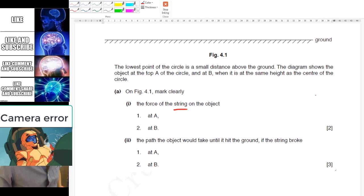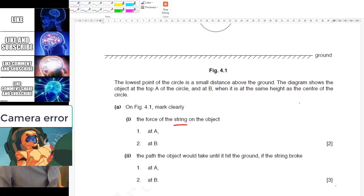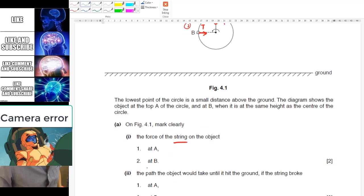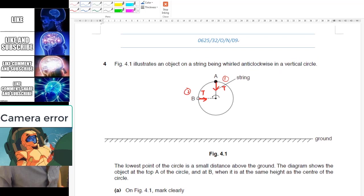On the path of the object would take until it hit the ground if the string broke. Oh okay, so at A if it broke then think about this, since it's going in the anti-clockwise direction right, so then the velocity you could imagine, okay don't draw this because they asked you to draw the path not velocity, so this is something that you need to be more careful. But for the velocity for preliminary idea, velocity is like this and this velocity is like this right, at A and at B.